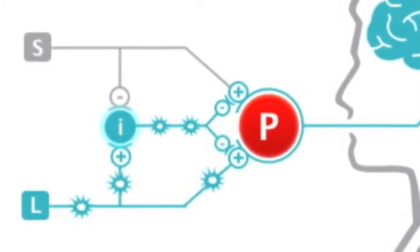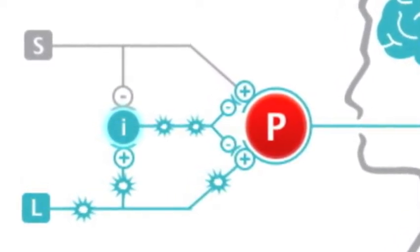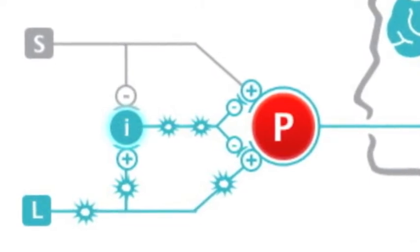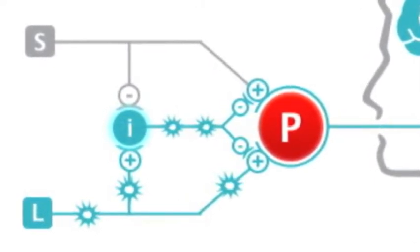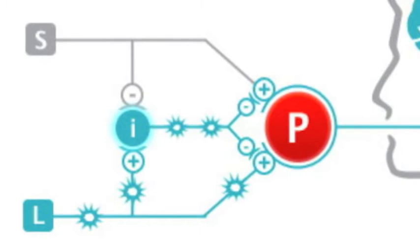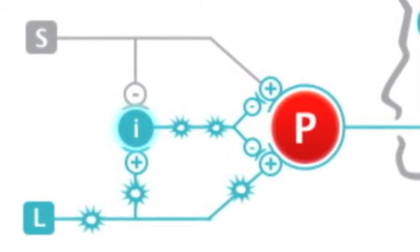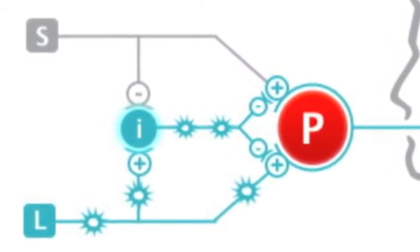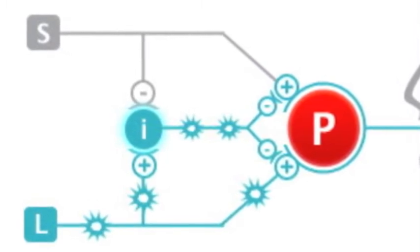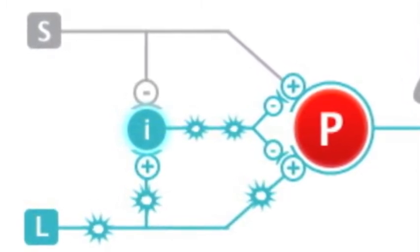It is thought from the famous gate control theory that pain depends on the balance of flow of information between the small and large fibers. Both small and large fibers connect to the inhibitory interneuron, or the I interneuron, and the protection neuron, or the P neuron.